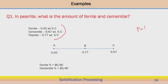Pearlite consists of the phase mixture ferrite plus cementite. Pearlite has a carbon weight percentage of 0.77. We assume ferrite has a carbon solubility of 0.028% and cementite has a carbon weight percentage of 6.67. We can draw schematically point A, point B, and point C based on the weight percentage of carbon. A is ferrite at 0.028%, B is pearlite at 0.77%, and C is cementite at 6.67%. We then simply apply the lever rule.